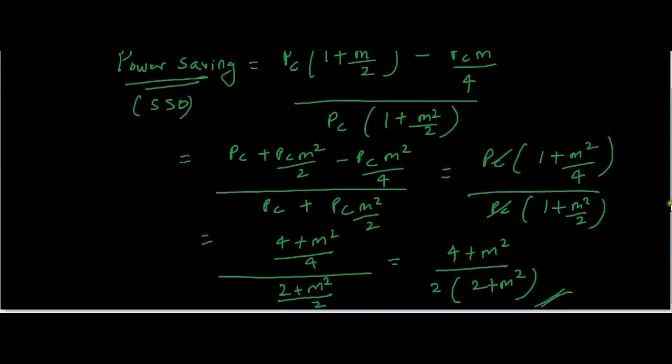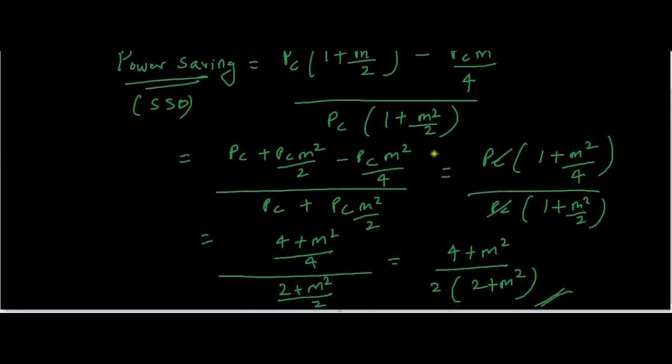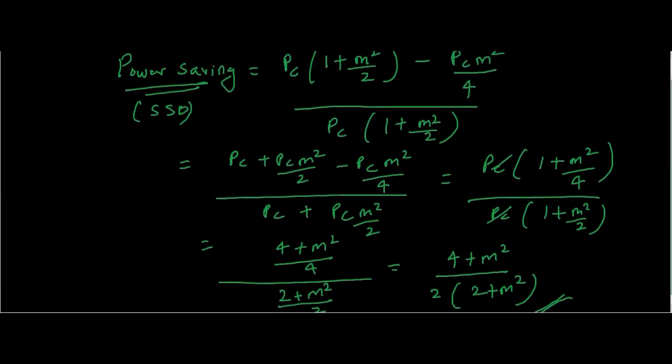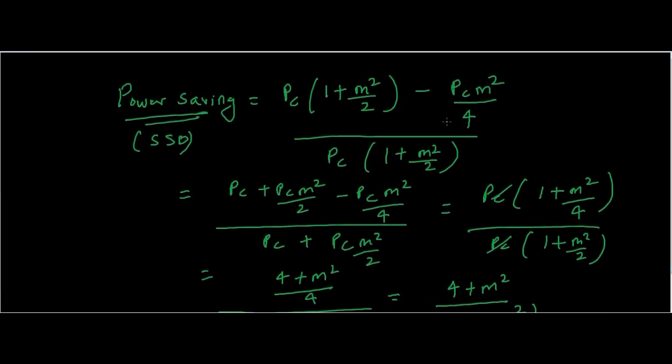This is how you derive the power saving for SSB modulation. If you want to derive a similar equation for DSBSC, just replace PC·m²/4 with PC·m²/2, because we need to consider two sidebands in case of DSBSC modulation.